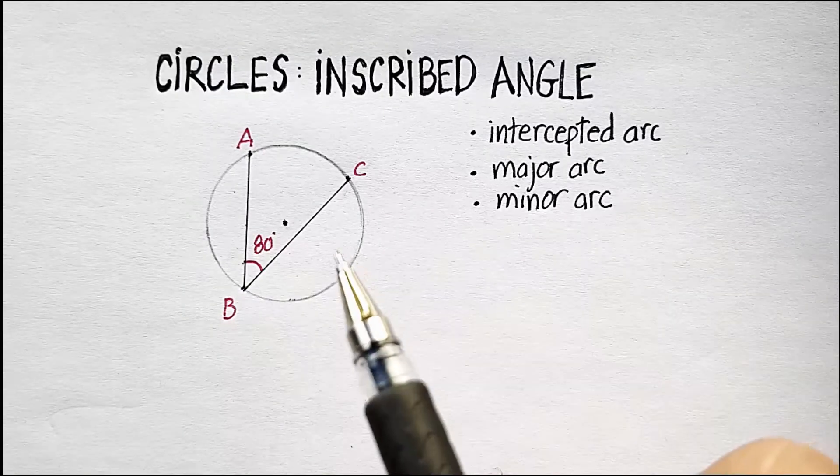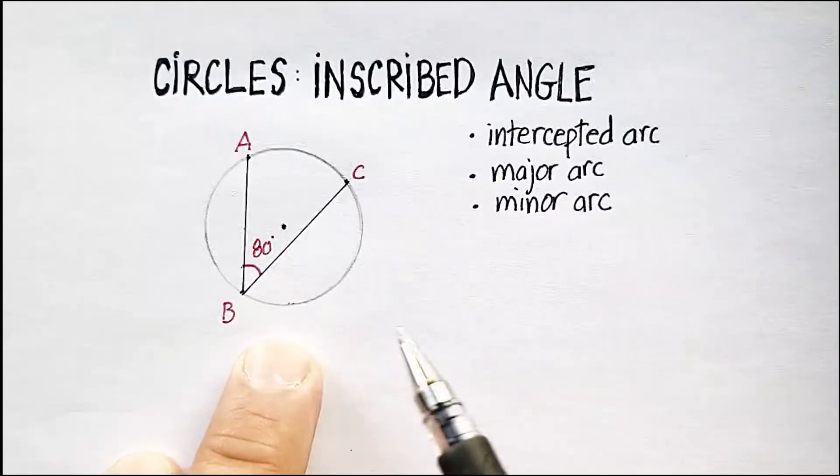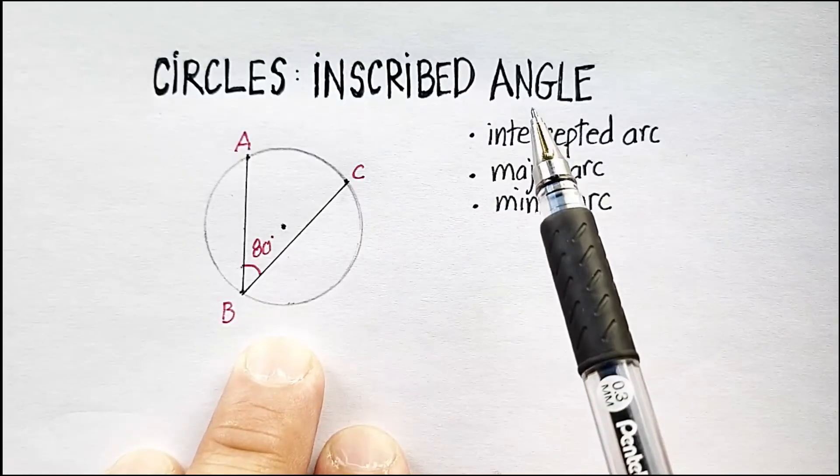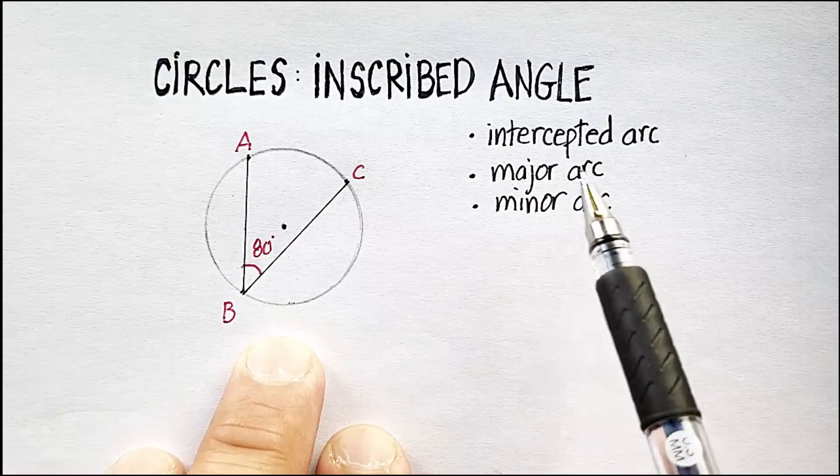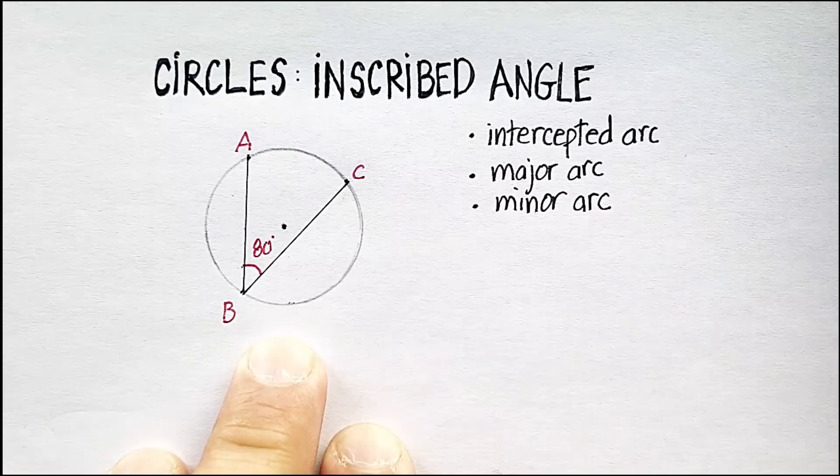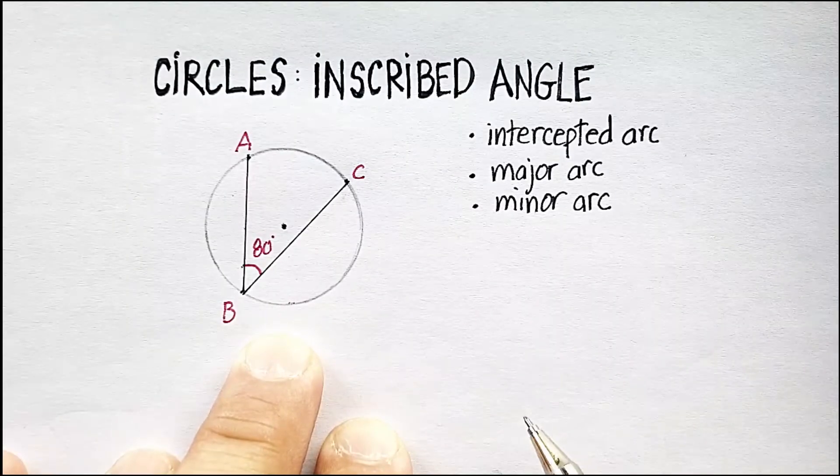Okay, in this video we're going to go over a concept called an inscribed angle in context of a circle. And related to the topic, inscribed angle is what they call an intercepted arc. And then I'm going to make a distinction between a major and a minor arc as well. Okay, so let's get started. What's an inscribed angle?